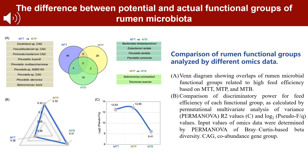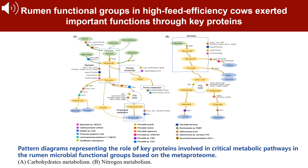Permanova showed significant compositional variations, with the greatest impact on MTP (12.85), followed by MTT (12.63) and MTB (8.41). MTP-based functional groups showed distinct microbial involvement in metabolic pathways, with significant roles in carbohydrate metabolism, amino acid metabolism, and bacterial chemotaxis. Key microbes like Selenomonas sp., Ruminobacter sp., and Prevotella sp. were identified in pathways such as glycolysis, TCA cycle, and purine metabolism.